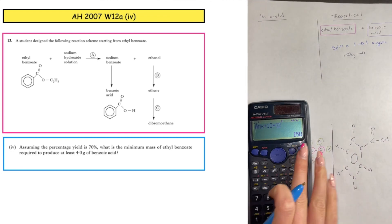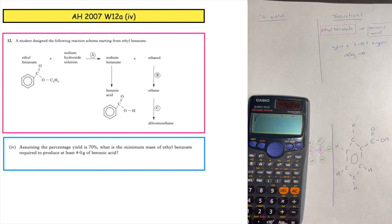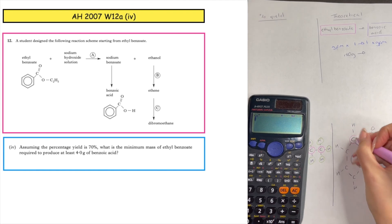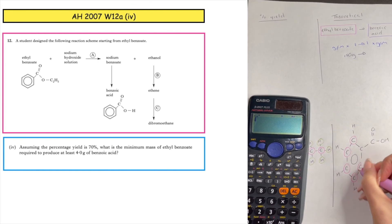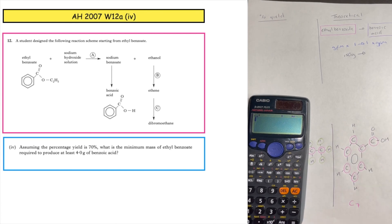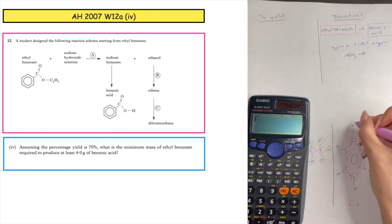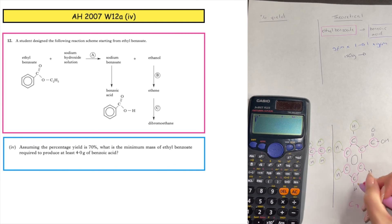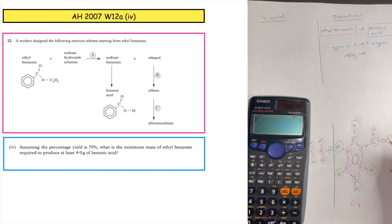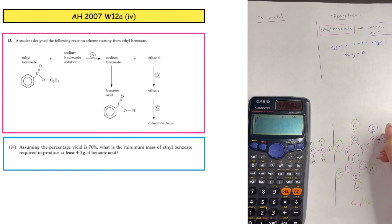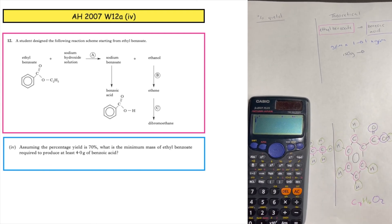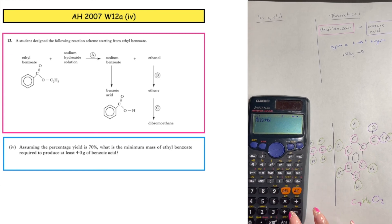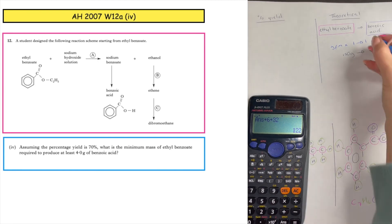I do the same for benzoic acid, drawing out the full structural formula. Counting the atoms: 7 carbons (C7), 6 hydrogens (H6), and 2 oxygens (O2). To work out the GFM: 7 times 12 plus 6 plus 32 gives 122 grams.